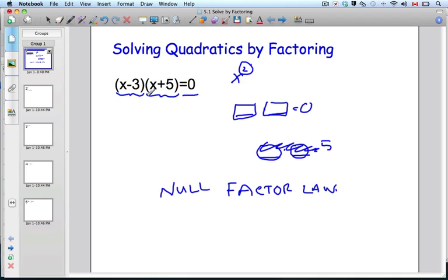And so when I apply the null factor law, I know that x minus 3 equals 0, or x plus 5 equals 0.